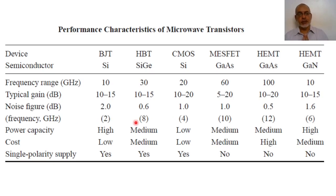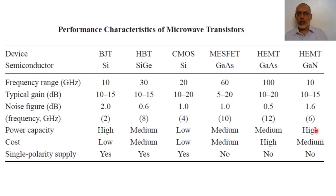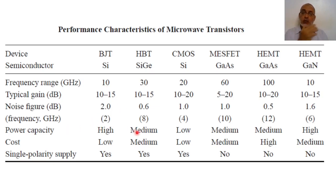From the point of view of power capacity: the bipolar junction transistor has high power capacity; the gallium nitride HEMT also has high power capacity. However, gallium nitride provides high power capacity at high frequency, while the bipolar junction transistor provides high power capacity only at low frequency. The heterojunction bipolar transistor has medium power capacity, CMOS has lower power capacity, and the MESFET and gallium arsenide HEMT have medium power capacity.